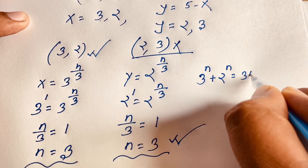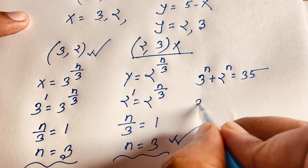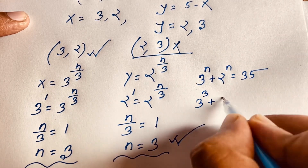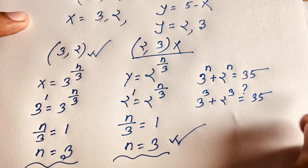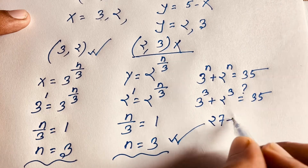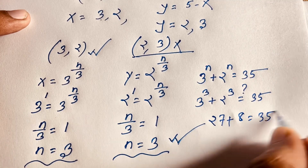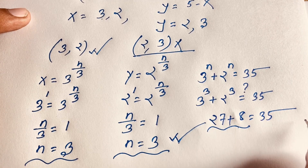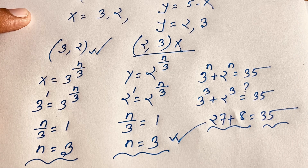Let's verify: 3^3 + 2^3 = 27 + 8 = 35. Indeed 35 = 35, confirming n = 3 is correct. Thank you all — if you enjoyed this video please subscribe to my channel for more interesting videos. Goodbye, take care!